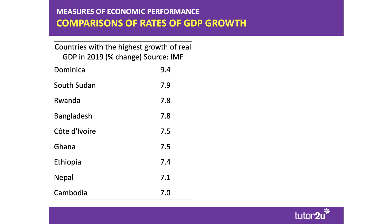These are the countries in the world, according to the International Monetary Fund, that had the highest rate of growth of GDP in real terms in 2019 — the Premier League, if you like, of fast-growing countries. Dominica at just under 10%, South Sudan, Rwanda — an interesting African country growing at just under 8% — and Bangladesh, a fast-growing Southeast Asian country. Notice that all of these fast-growing countries are developing or emerging countries, which is typically the case as they have potential to grow much more quickly.